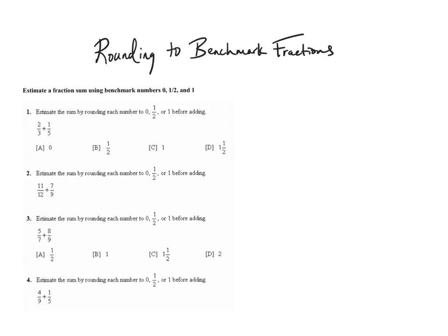The numbers we have are 2 thirds and 1 fifth. When I'm doing these, I draw myself a little number line for each fraction to model each one. So my first one, I'm going to draw a little number line starting at 0, then put 1 half, and 1 whole. Now I'm going to change each of these to thirds. So 0 equals 0 thirds, 1 whole equals 3 thirds, and 1 half as thirds would be half of 3, which is 1.5. So 2 thirds would be somewhere right about here.